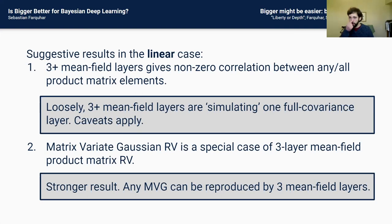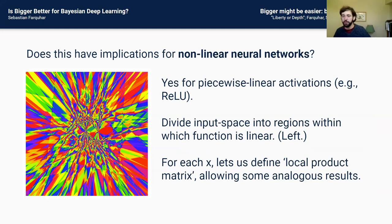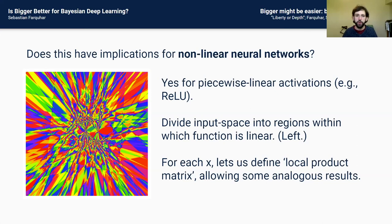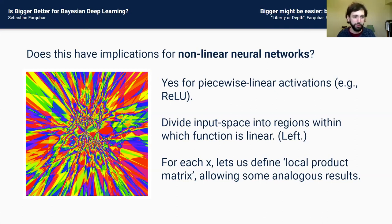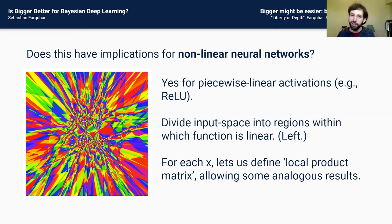A reasonable question is: does this have anything to do with nonlinear neural networks? With piecewise linear activations like ReLU, you can divide input space into regions within which the network is linear — it's overall a piecewise linear function. This lets us define for each input point a local product matrix where you can get analogous results. These local product matrices show how you can get similarly complicated correlations at a given point or region of space, even with nonlinearities.